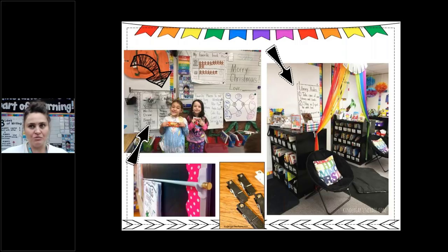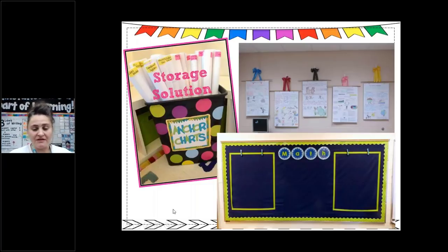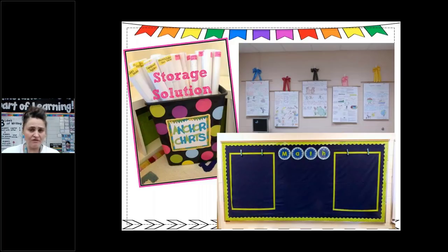Here's another idea — not mine, from Pinterest — using command hooks, a tension rod, book rings, and keeping anchor charts that way. You can also roll them up, put a rubber band or binder clip around them, add a little label so you know what it is, and put them in a trash can or bin to find later. Another teacher used dowel rods — same concept — hole punched with rings and hung by a ribbon for a fancier look.